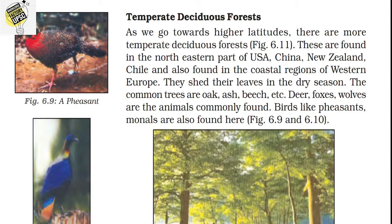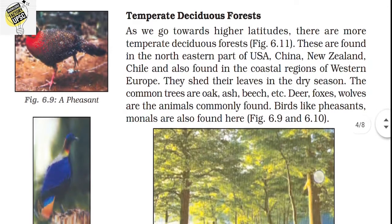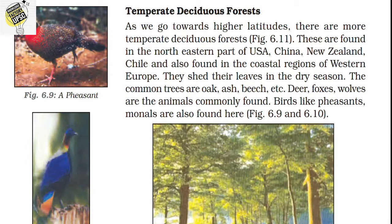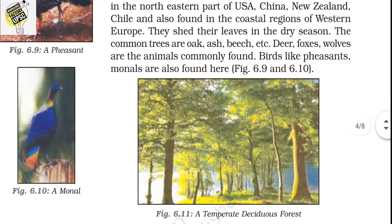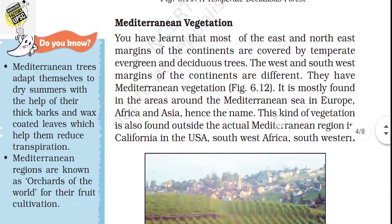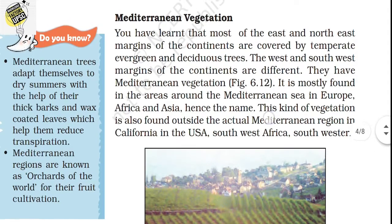Towards higher latitudes, there are more temperate deciduous forests. These are found in the northeastern parts of USA, China, New Zealand, Chile, and in the coastal regions of western Europe. They shed their leaves in the dry season. Common trees are oak, ash, and beech. Deer, foxes, and wolves are common animals, and birds such as pheasants and monals are also found in these regions.